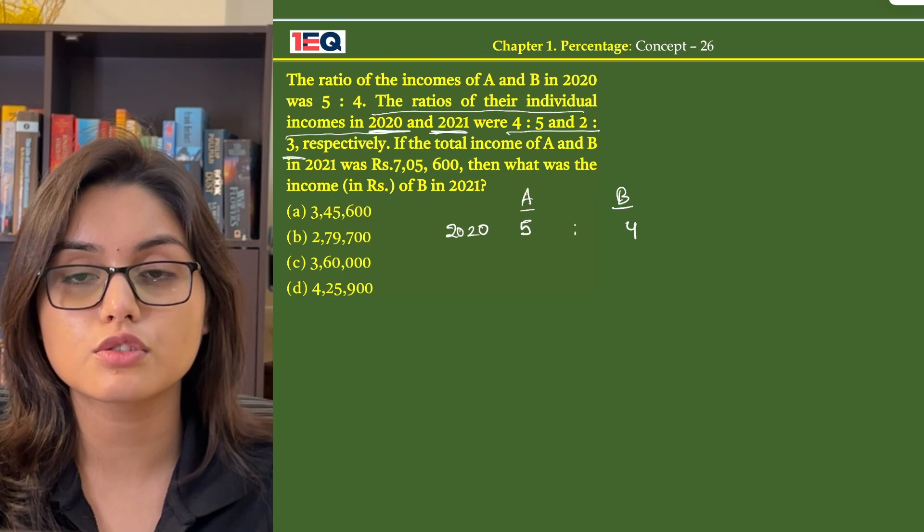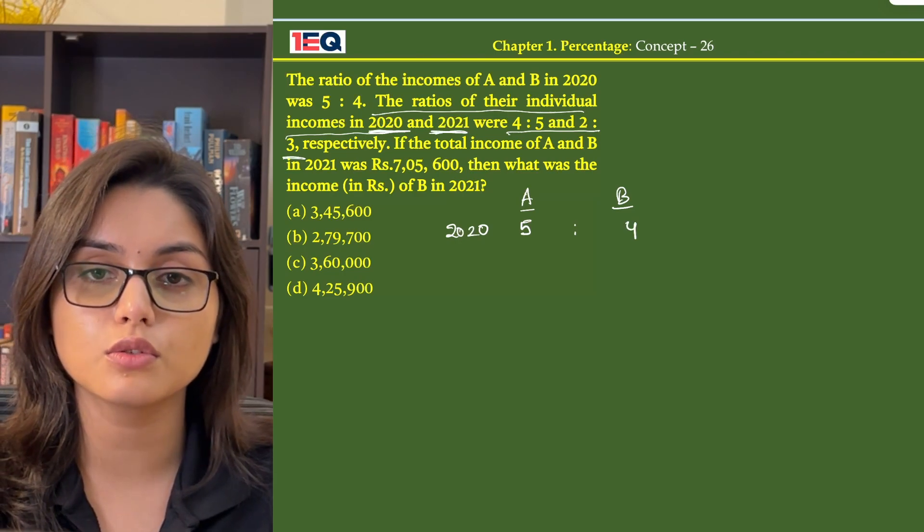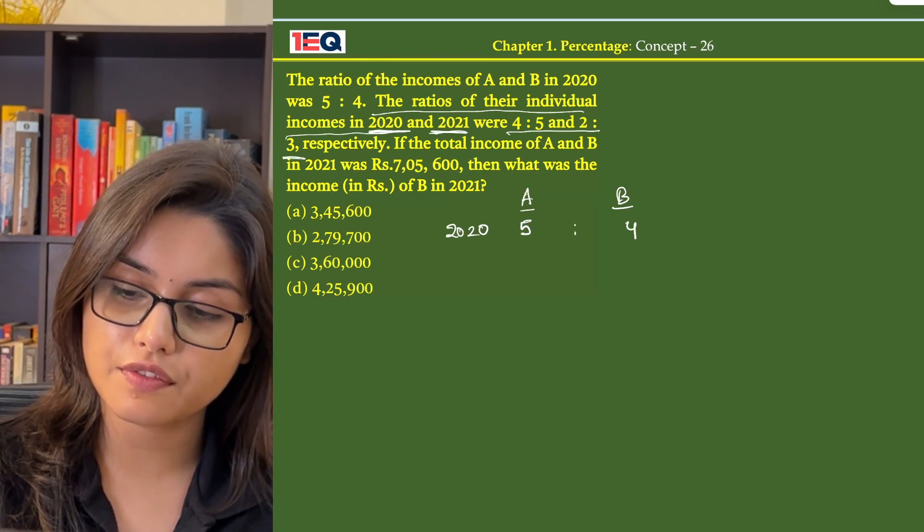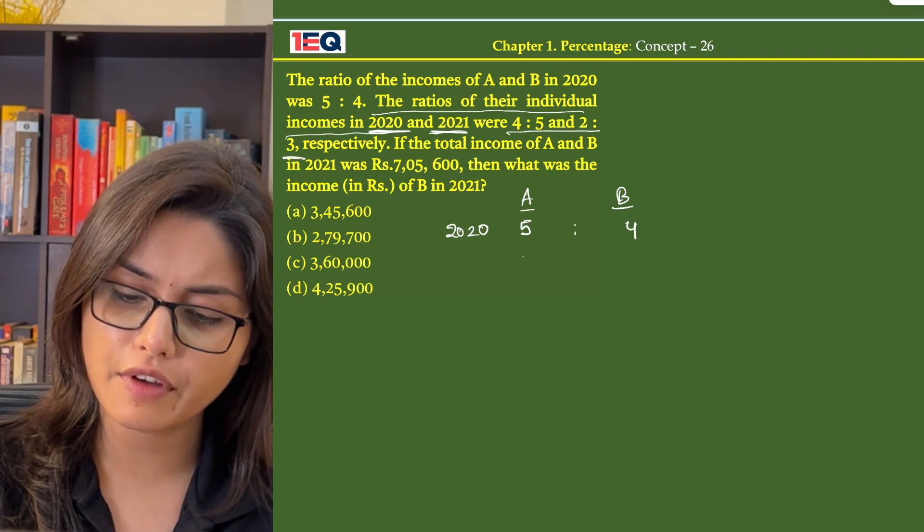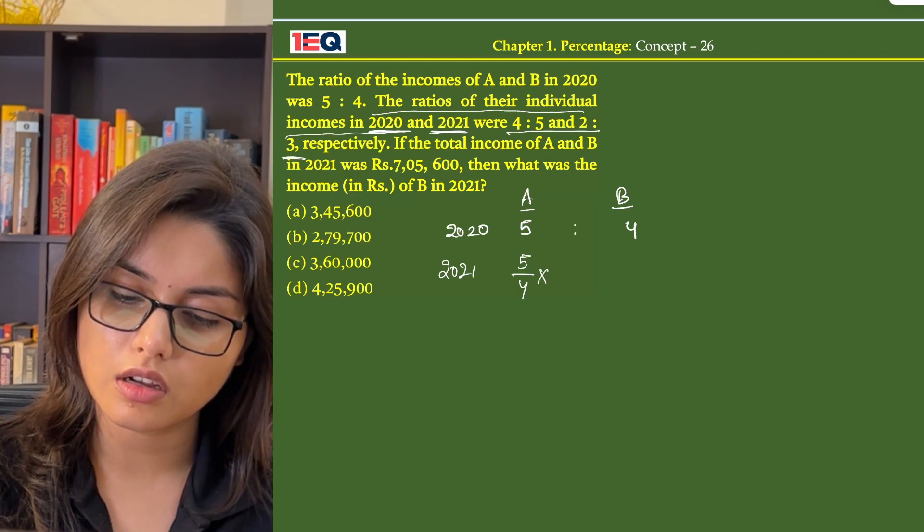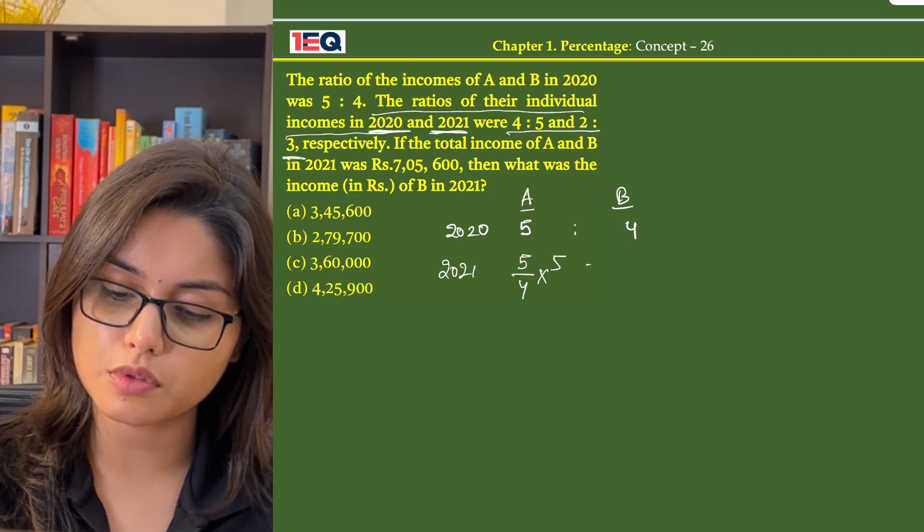That means 4 to 5, where 4 was the value in 2020, so 5 is the value of A in 2021. That means A multiplied by 5 is the value of 2021.